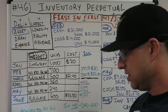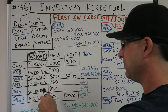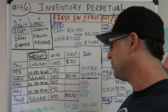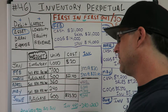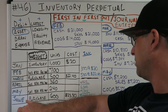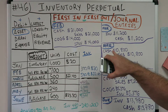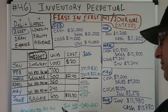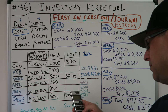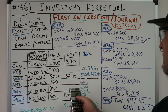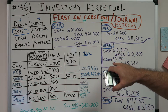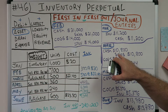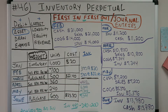In April we sell 360 widgets at $30 each. Let's take care of the easy part first — we're selling, so we're getting cash, which is a debit. How much? 30 times 360 equals $10,800. Debit Cash $10,800. And the credit is Sales: $10,800. That's our first journal entry.